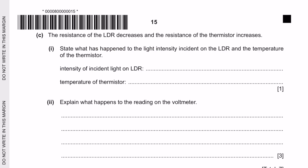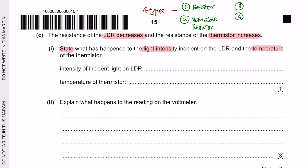Next question C: The resistance of the LDR decreases and the resistance of the thermistor increases. Part 1: State what has happened to the light intensity on the LDR and the temperature of the thermistor. In your syllabus, you will come across 4 types of resistor: a fixed resistor, variable resistor, a thermistor and light-dependent resistor. A standard resistor has a fixed resistance, and variable resistors can have their resistance changed.